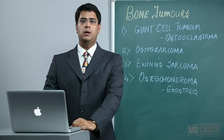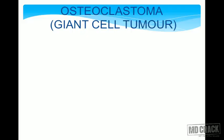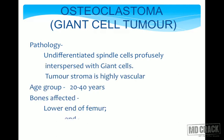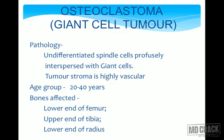The first important tumor is osteoclastoma, commonly known as the giant cell tumor. In giant cell tumor, the pathology shows undifferentiated spindle cells profusely interspersed with giant cells, and the tumor stroma is highly vascular. The age group commonly affected is the second to fourth decade, that is 20 to 40 years. The bones commonly affected are the lower end of the femur, upper end of the tibia, and lower end of the radius — classical sites mostly around the knee joint.